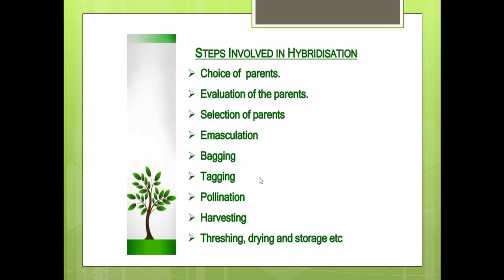These are the steps involved in hybridization: first step is choice of parents, where good quality parents are selected, then evaluation and selection of the parents, followed by emasculation, bagging, tagging, pollination, and finally harvesting and threshing. You will study this in detail in chapter 9.